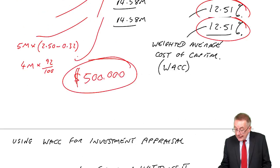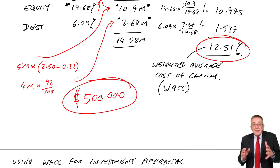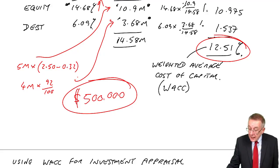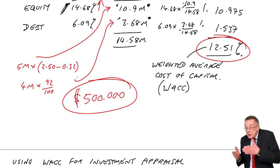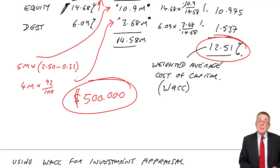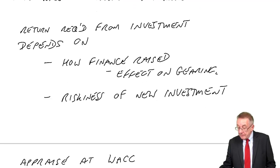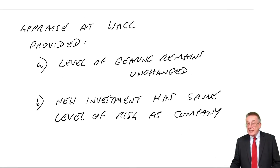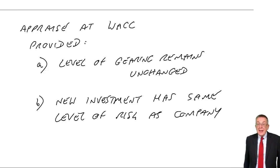That we're not investing in an investment that's a lot more risky or a lot less risky. And, of course, whatever the current level of risk of the business is, shareholders were happy with 14.68. If the new investment has the same level of risk, then, of course, for that bit of it, they'll be happy presumably with 14.68. Now, in the exam, I've kept saying, we do appraise at the weighted average, but be clear that we are making those two big assumptions, that the level of gearing stays the same and that the new investment is the same risk as the company.